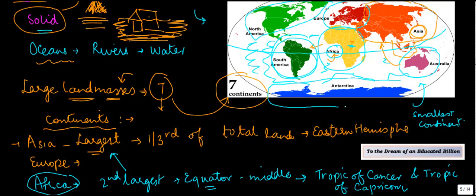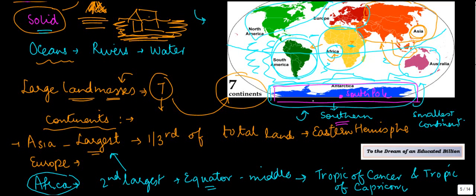And then you have Antarctica. Antarctica lies in the southern continent. It's completely in South. So if you see, this is completely in the southern part of the continent. And if you notice, the South Pole is also kind of in the middle of this Antarctica.